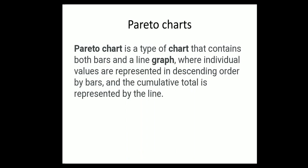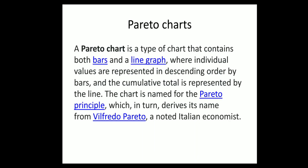A pareto chart is a type of chart that contains both bars and a line graph where individual values are represented in descending order by bars and the cumulative total is represented by the line.